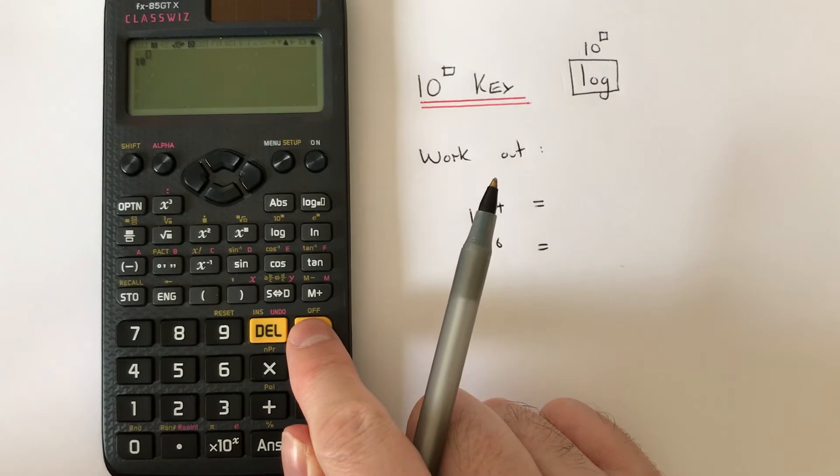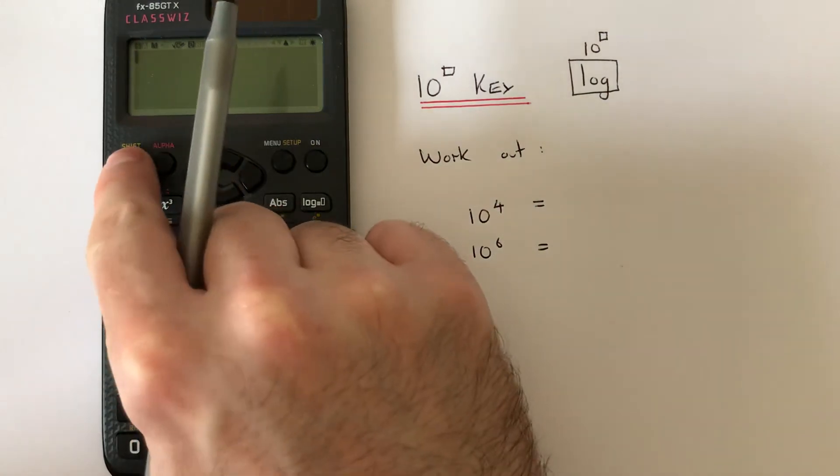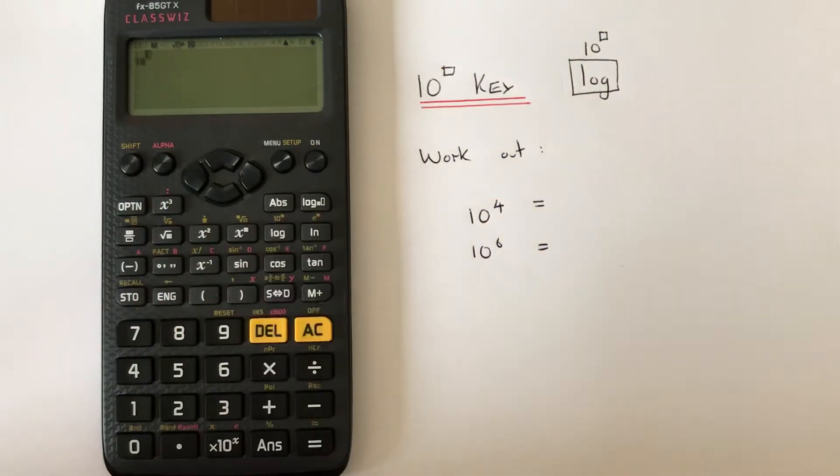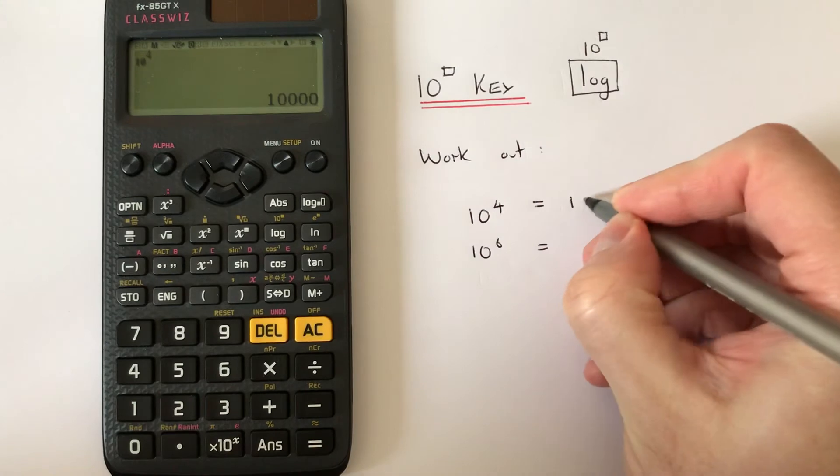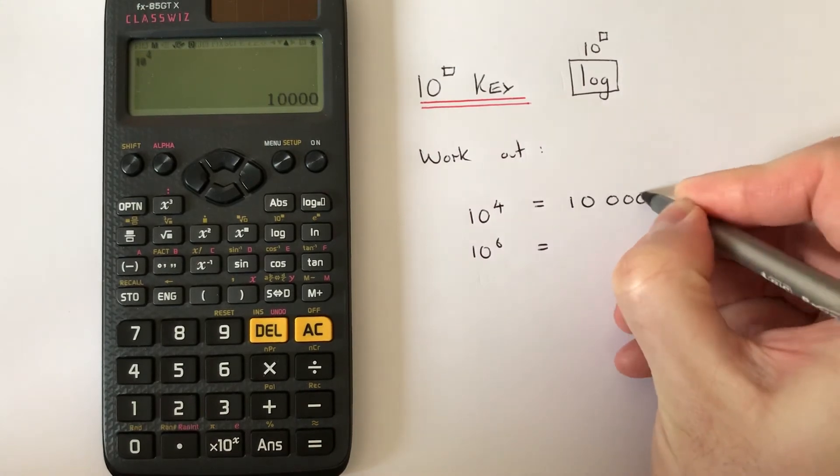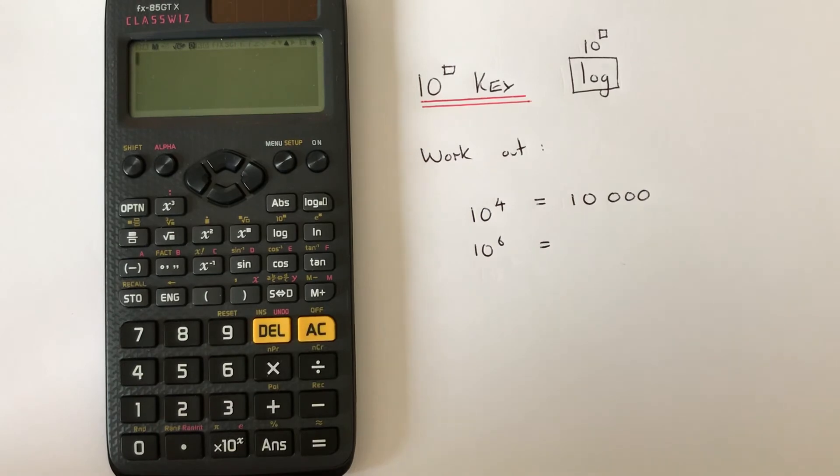Let's have a look at the first example. We need to work out 10 raised to the power of 4. So if we press shift log and then type the 4 in the box and press equals, we get the answer 10,000.